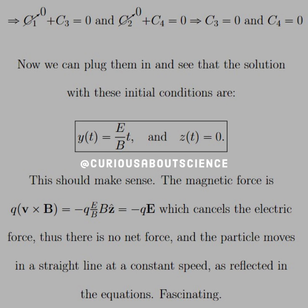This indicates that we are traveling in a straight line, by the way, and this should make sense, given that the magnetic force is q times v cross b, which simplifies down to negative qe.